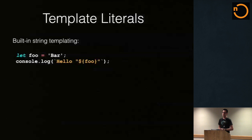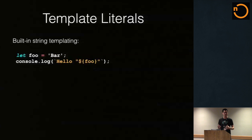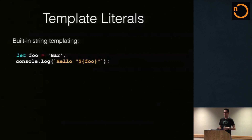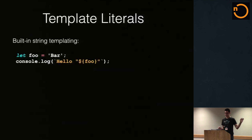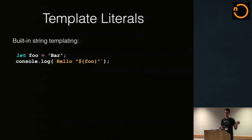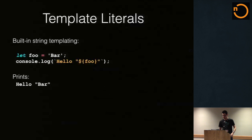Next up, I'm going to talk about template literals. These used to be called quasi-strings, if you've been following the spec process at all. Basically this is templating — it's most similar to underscore templates, but you can also think mustache or handlebars, except it's built into the language. You use the back-tick character to specify a template string, just because it was kind of the only quote we had left on the keyboard. And you use the dollar sign and then curly braces around it, and you can put any JavaScript expression you want inside of that and it will be evaluated. So when we run this code, we get hello bar.